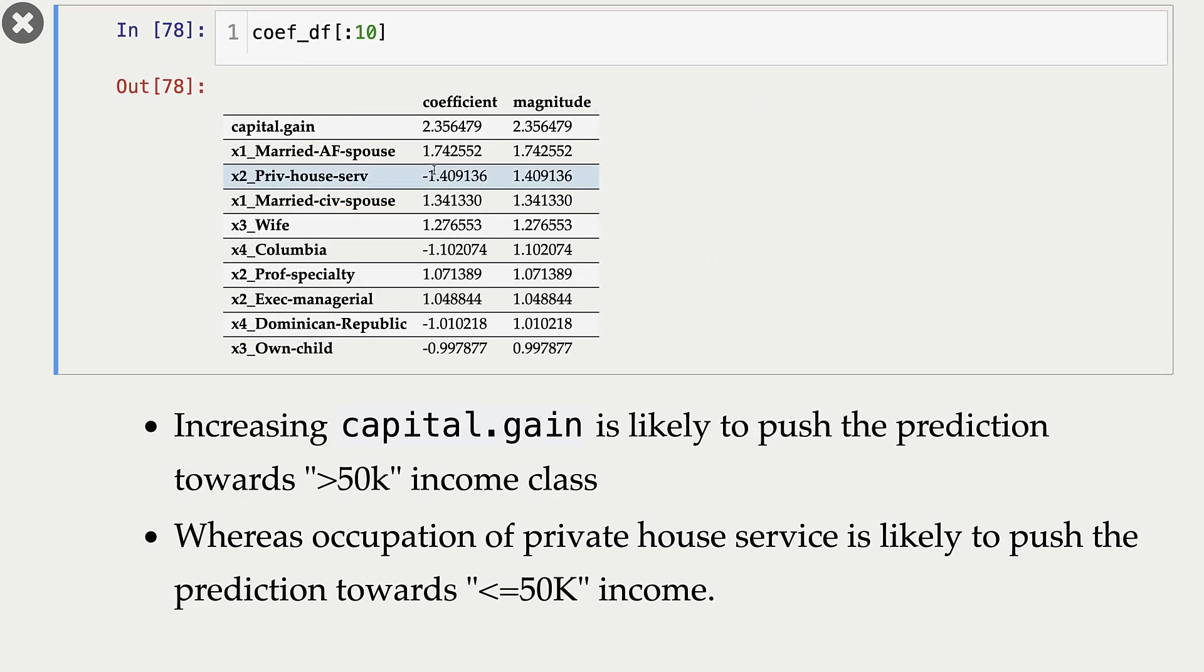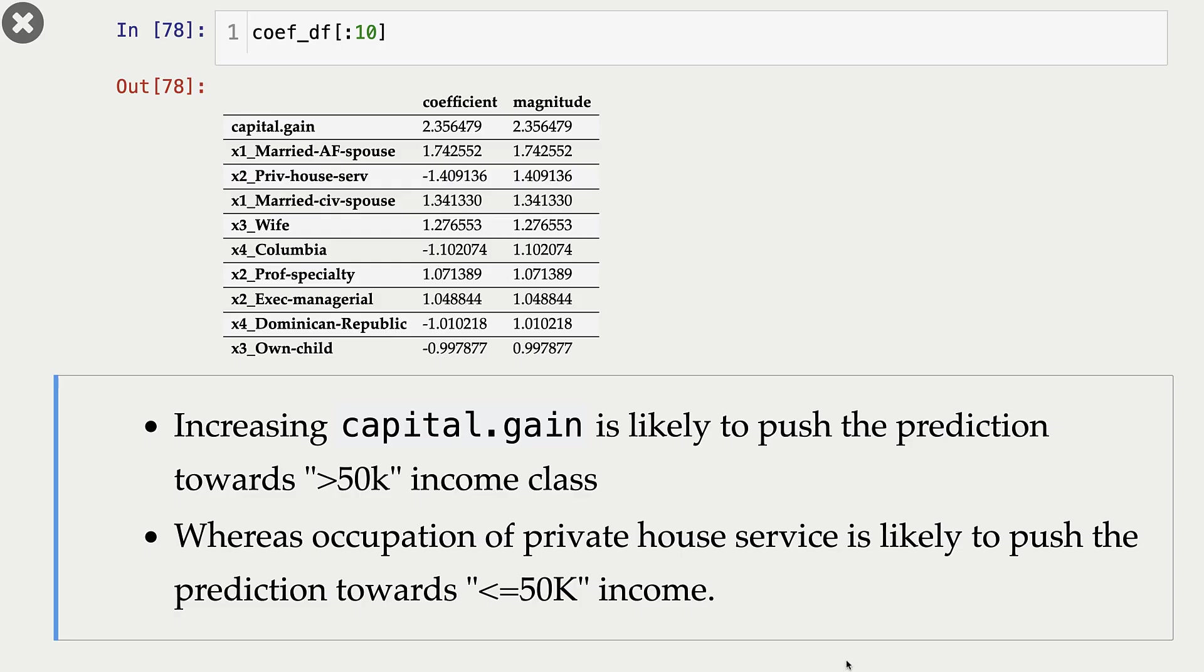Let's look at the coefficients. So these are our top features. And what do we see here? We see that increasing capital gain is likely to push the prediction towards greater than 50k. And this occupation of private house service, for instance, is likely to push the prediction towards less than or equal to 50k income. So with logistic regression, we get these coefficients. Coefficients have signs, and the signs tell us in what direction the feature is going to affect the prediction.